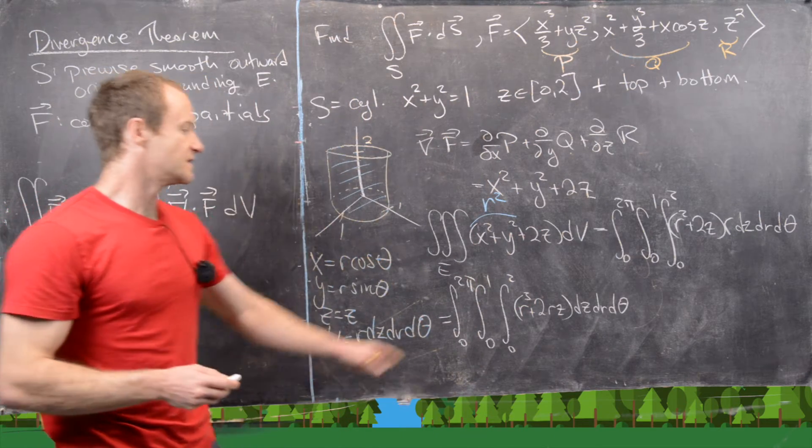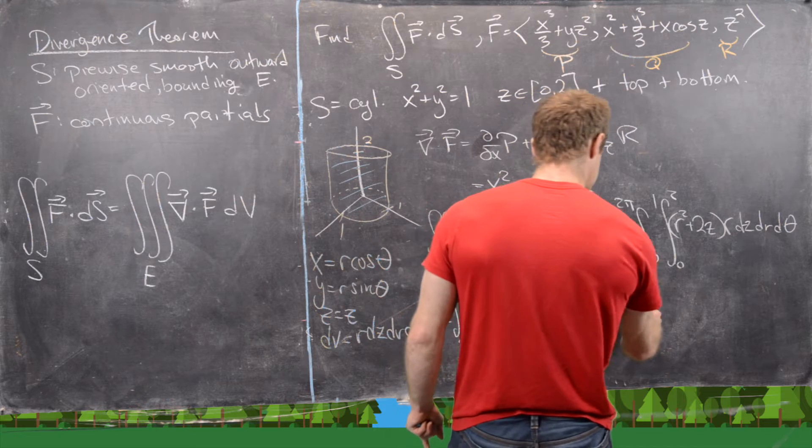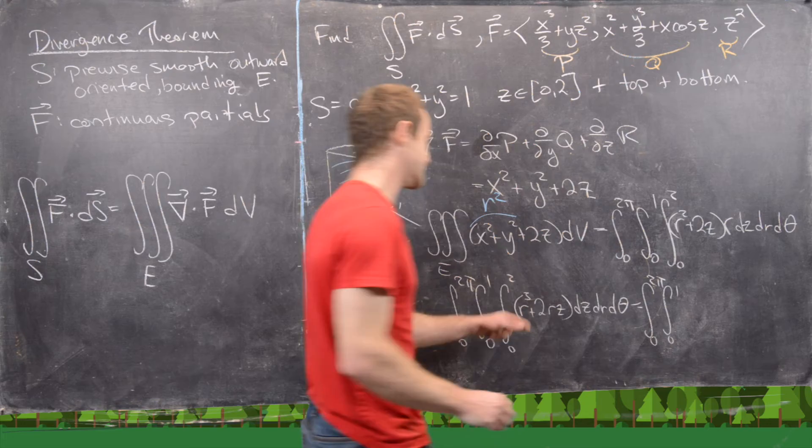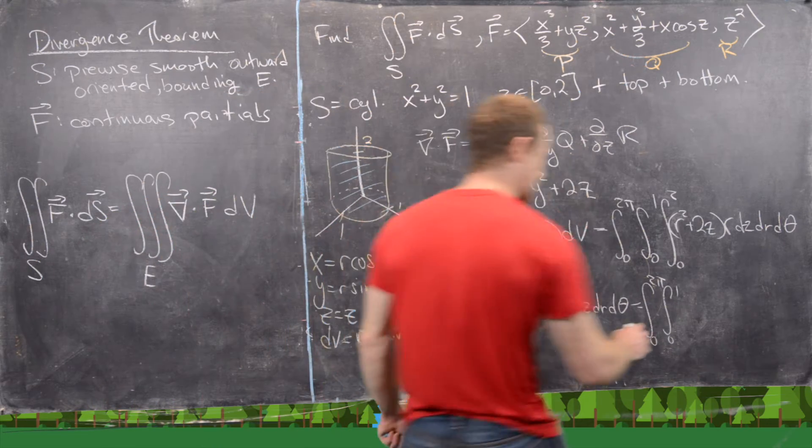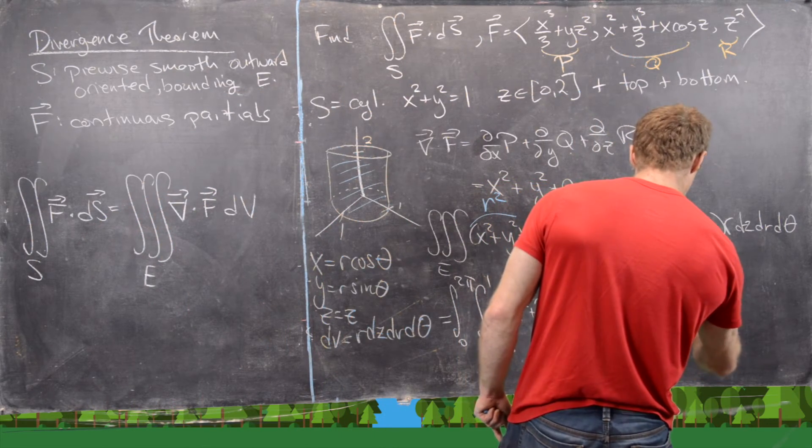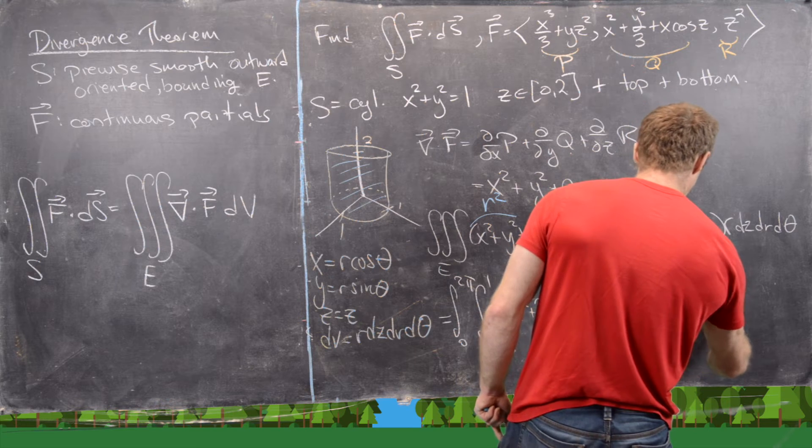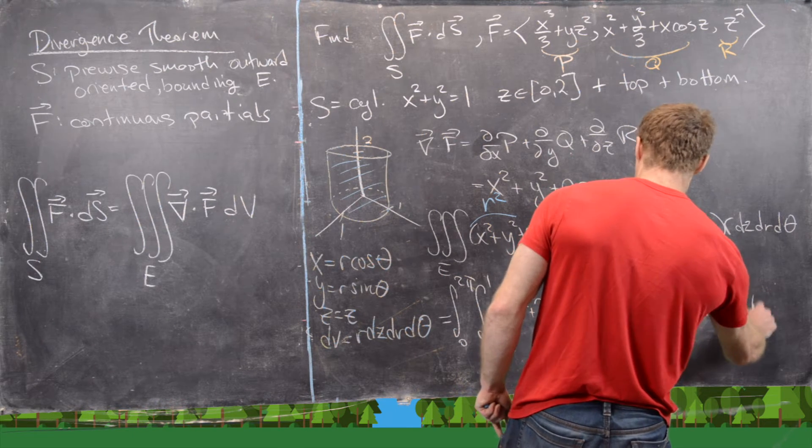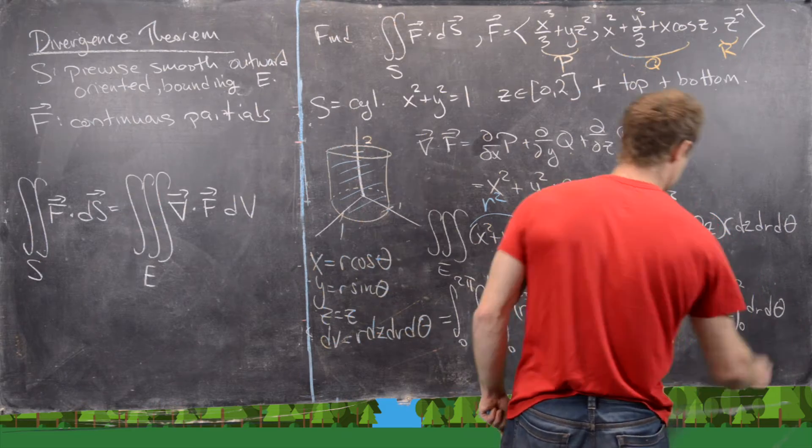So now let's go ahead and take that z antiderivative. So 0 to 2pi, 0 to 1, then the z antiderivative is going to give us r cubed z, and then plus r z squared, evaluate that from 0 to 2, and then dr d theta.